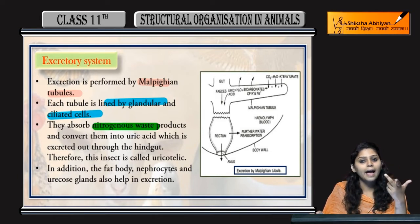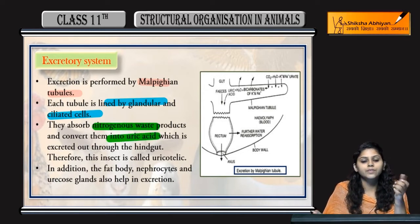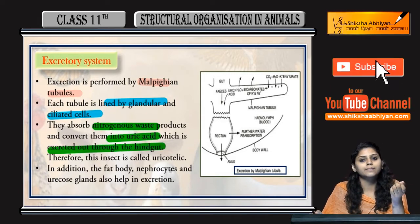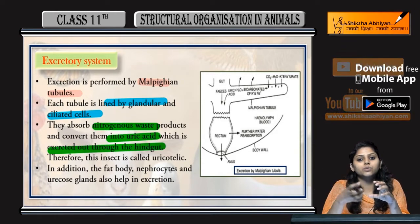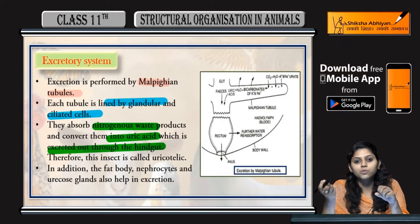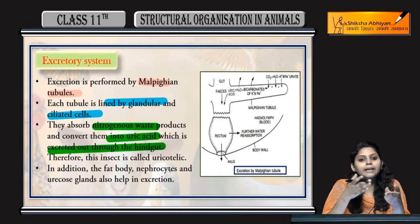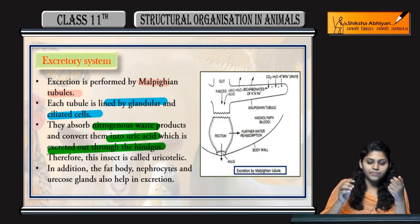Absorb kertah hai and convert kertah hai them into uric acid - uric acid me convert kertah hai, excret kertah hai through the hind gut. Malpighian tubule me kya hua? Nitrogenous waste products jitne bhi hai woh absorb huay, uric acid me convert huay, and hind gut ke through woh excret ho jayenge - sent out of the body.